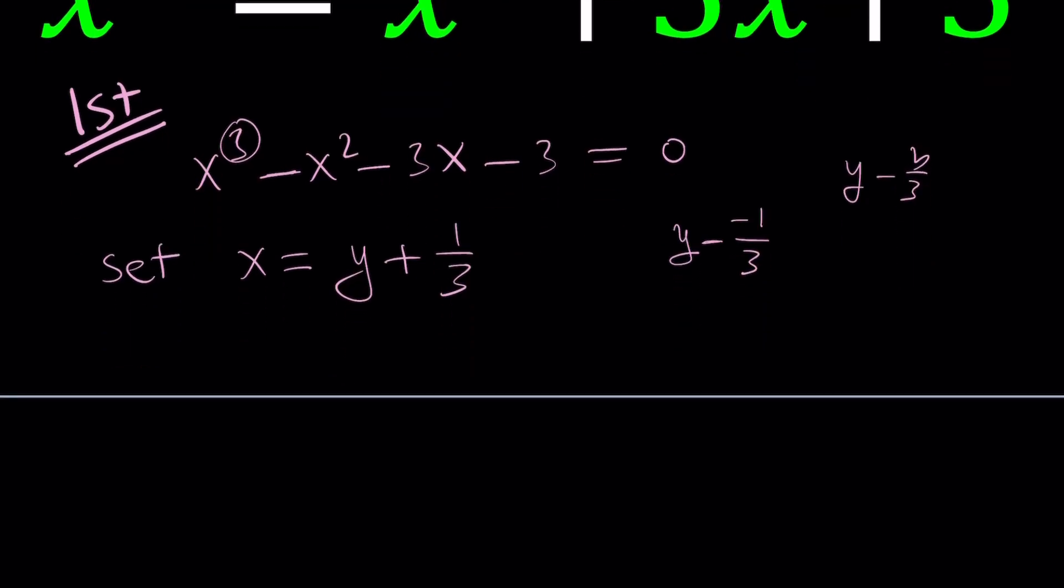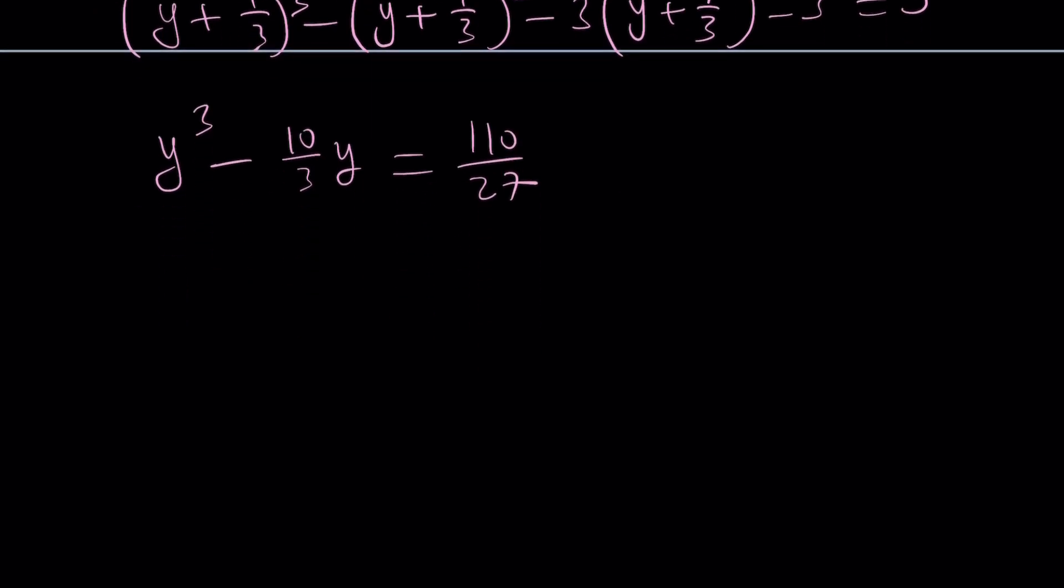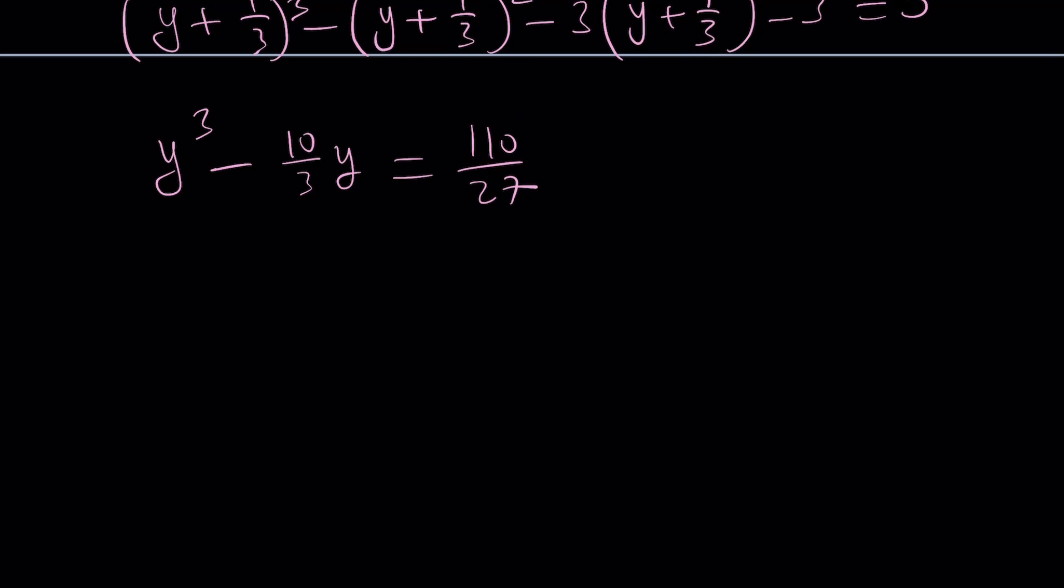Now, let's go ahead and plug this in. When we do, we're going to get something like y plus 1 over 3 cubed minus y plus 1 over 3 squared minus y plus 1 over 3 minus 3 equals 0. And when you simplify this, you're going to get a very nice cubic. And that's going to be y cubed minus 10 over 3y equals 110 over 27. Now, I wanted to put the constant on the right-hand side because that's basically how you solve with the cubic formula.